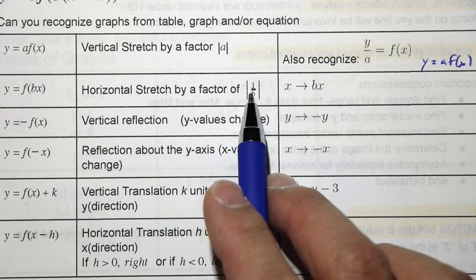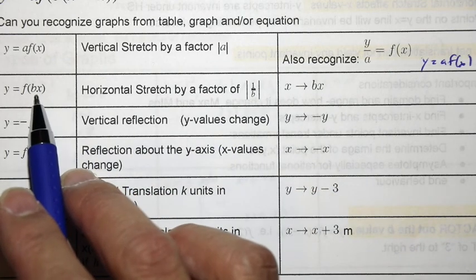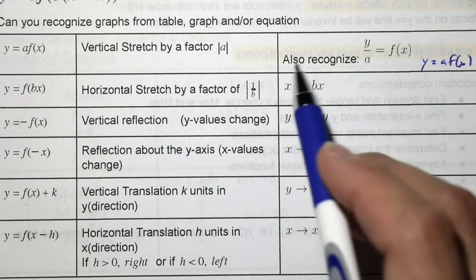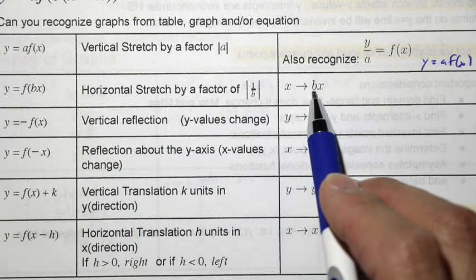b, if this is two, then it's a horizontal stretch factor of a half. If b is one third, then the horizontal stretch would be three. And here is the replacement of x becomes bx.